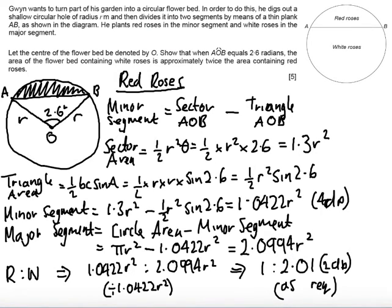Well let's have a look to see how the marks are awarded in this question. First of all, there is a standalone mark if you worked out that the sector area is 1.3 R squared. Second, there is another standalone mark if you worked out the area of the triangle to leave the segment, which is half R squared sine 2.6.